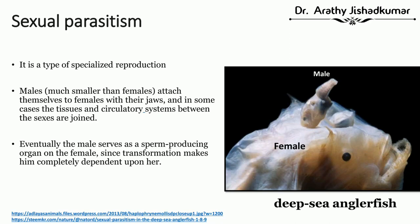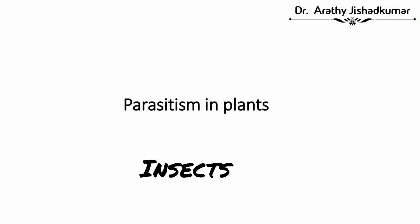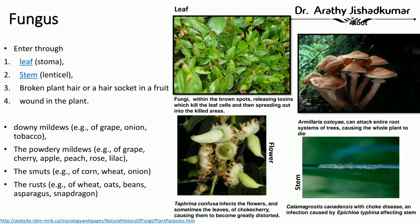Parasitism is not limited to animals — there are also parasites that affect plants. Different kinds of plant parasites exist: fungus, insects, and even parasitic plants. Fungus usually enters plants through the leaf, stem, broken plant hairs, or wounds. Once inside, it can make the plant sick and cause disease.